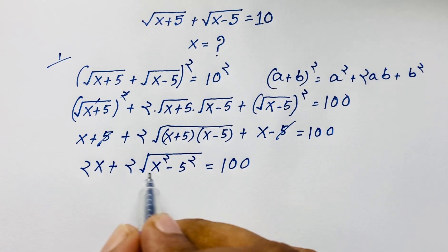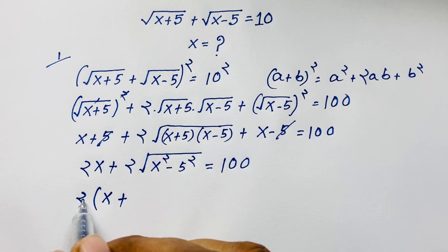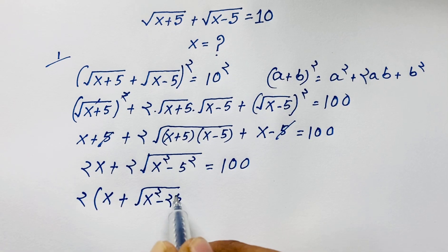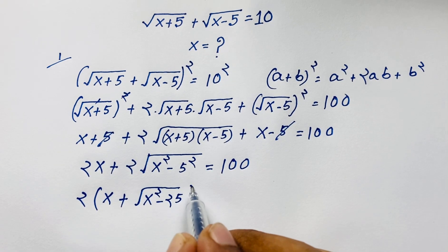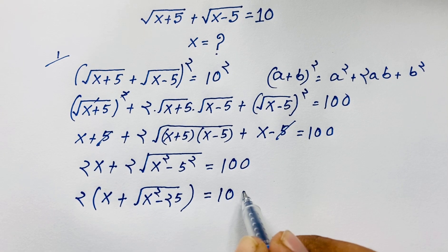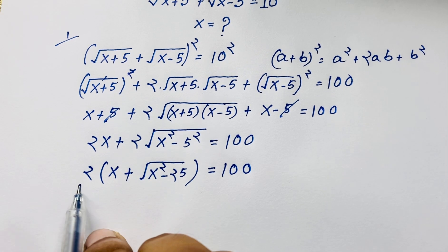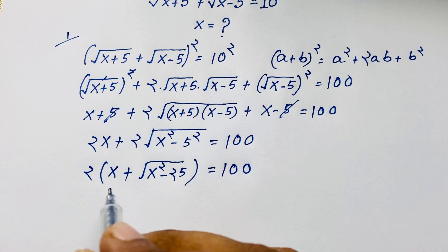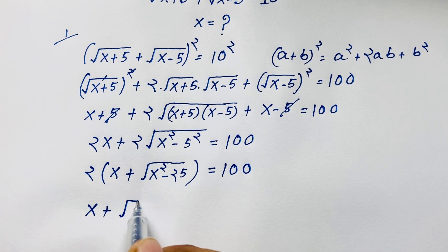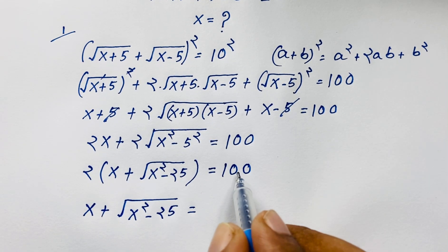Now 2 is common. If I take 2 as common and divide both sides by 2, it will be x plus square root of (x squared minus 25) — since 5 squared is 25 — is equal to 100 divided by 2, which is 50.